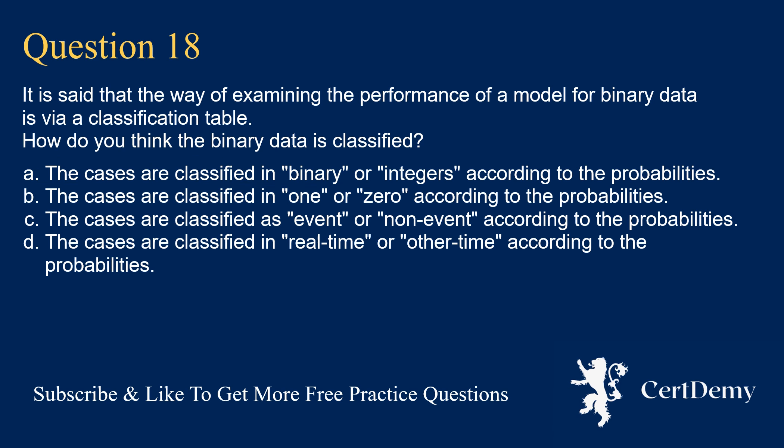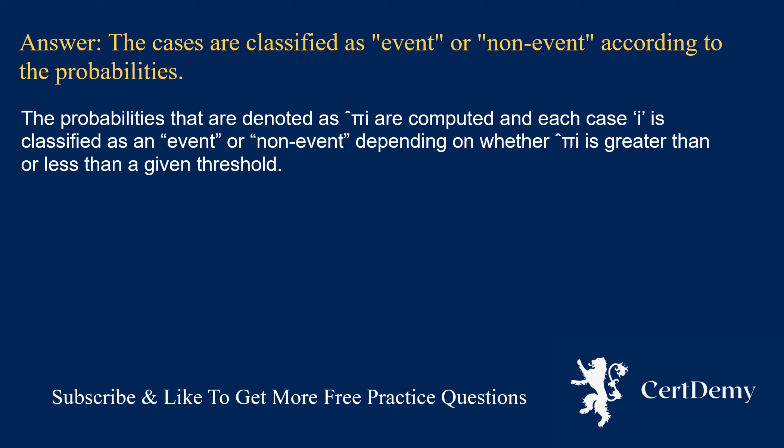Question 18. The performance of a model for binary data is examined via a classification table. How is binary data classified? Options: in binary or integers according to probabilities; in 1 or 0 according to probabilities; as event or non-event according to probabilities; in real time or other time according to probabilities. The answer is: the cases are classified as event or non-event according to the probabilities. The probabilities pi_i are computed and each case i is classified as event or non-event depending on whether pi_i is greater than or less than a given threshold.